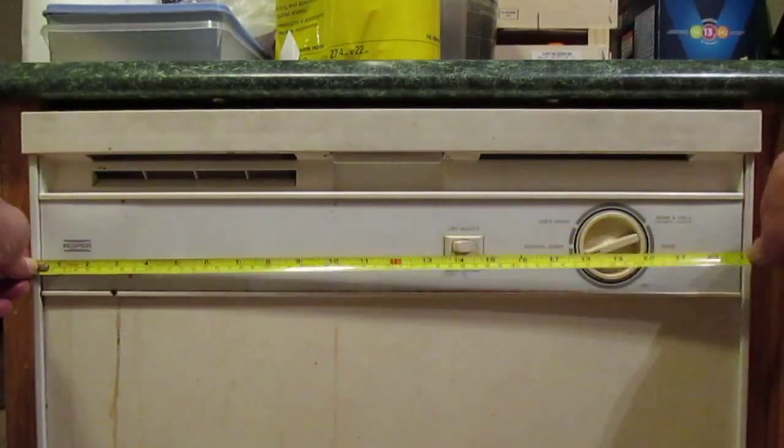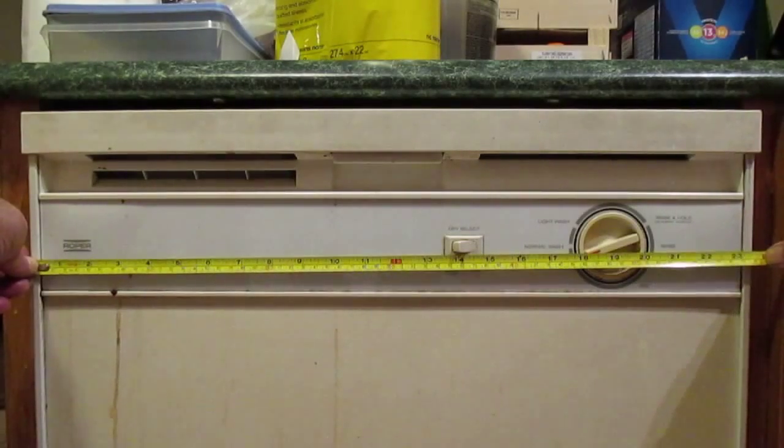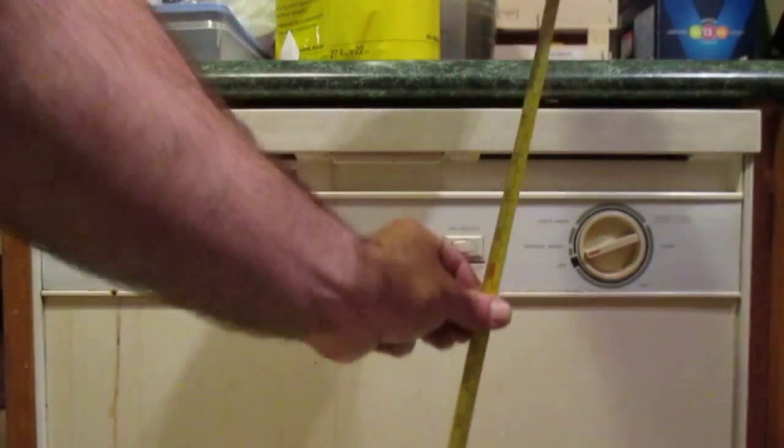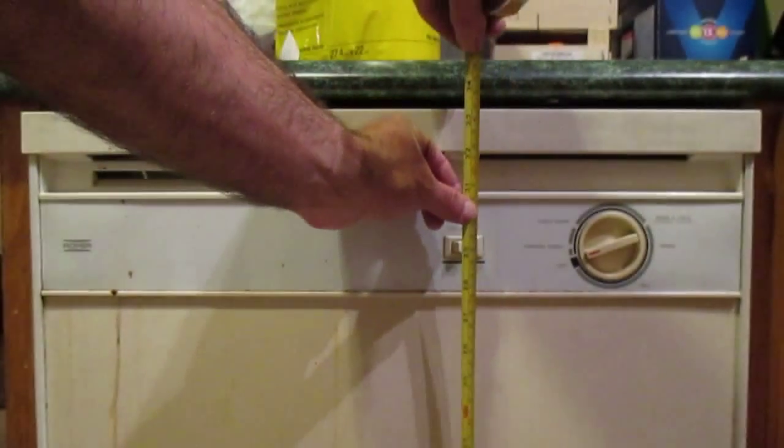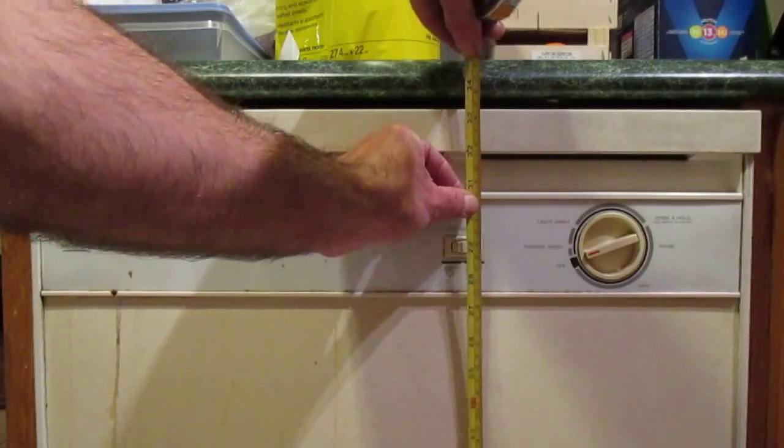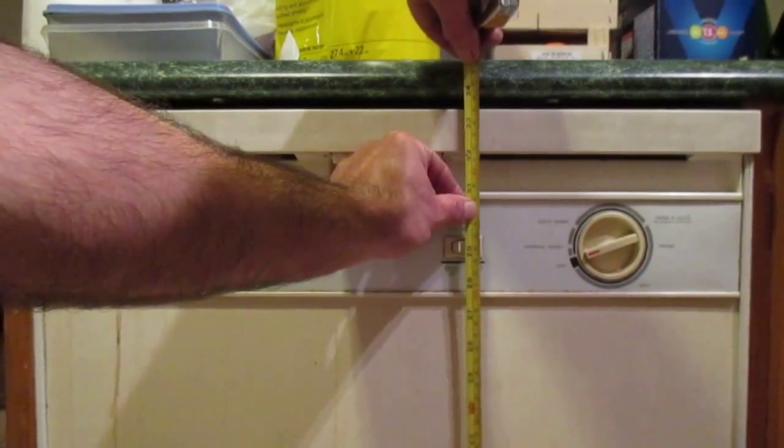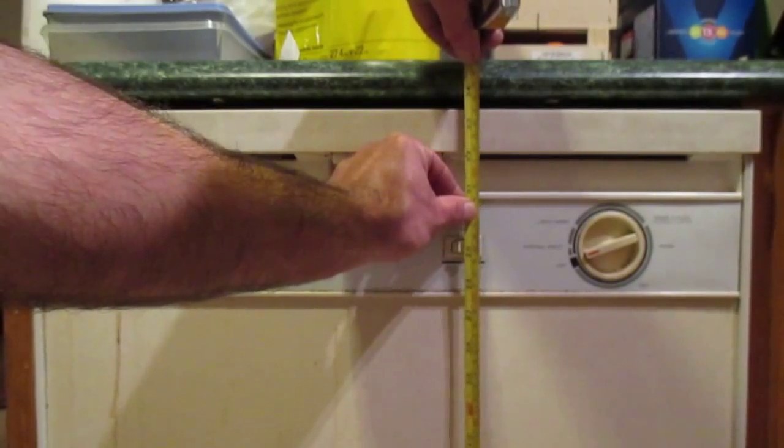This dishwasher is 23 and a half inches wide. I'll put my measuring tape down to the floor and it's about 33 and three quarters of an inch high.